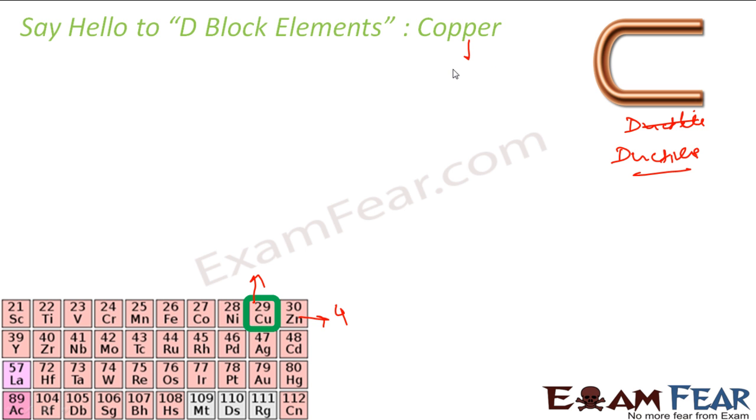Since this was mined in Cyprus, which is in Greece, this was called cuprum. Because this was mined in Cyprus, this is called cuprum. The Latin word is still cuprum, Cu, and then this copper word came.